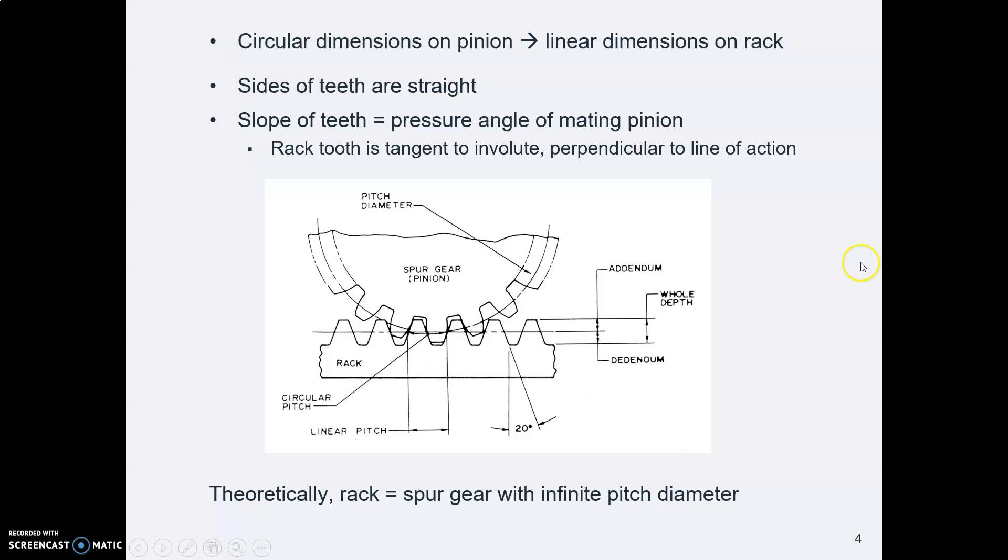If that bugs you and you don't like it, just ignore what I just said. What you need to remember is that rack teeth are flat, and the pressure angle that they give you for the gear is the slope of that gear tooth.